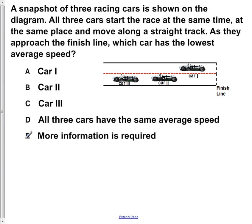A snapshot of three racing cars is shown on the diagram. All three cars start the race at the same time, at the same place, and move along a straight track. As they approach the finish line, which car has the lowest average speed?